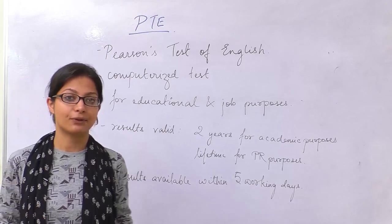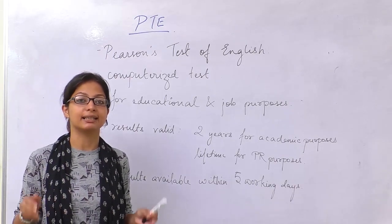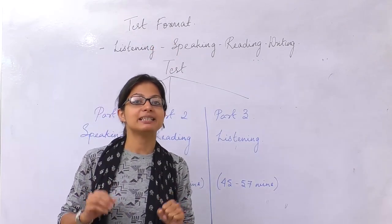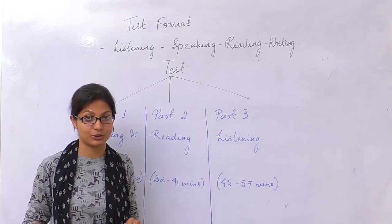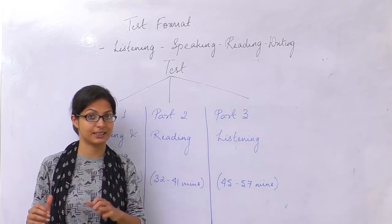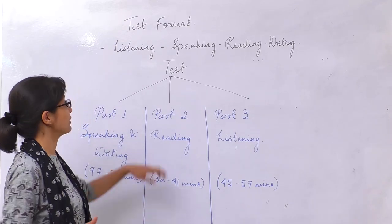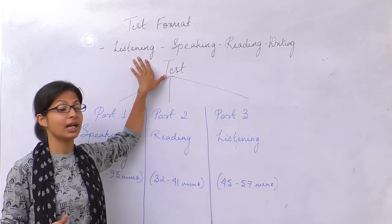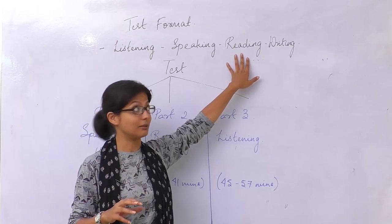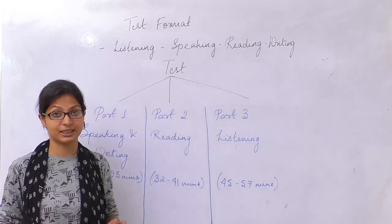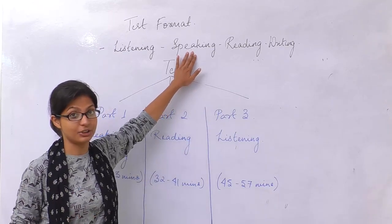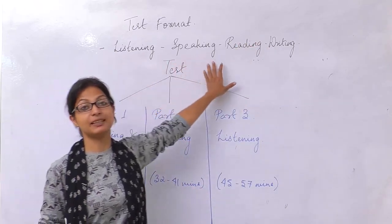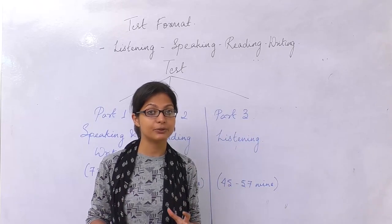Now let us look into the test format — what exactly PTE tests and in which way. PTE tests you on the four macro skills of language: the receptive skills and the productive skills. The receptive skills of English involve listening and reading — how well you can understand oral language and written language. The productive skills cover how well you can speak and write in English. PTE will test your listening, speaking, reading, and writing.